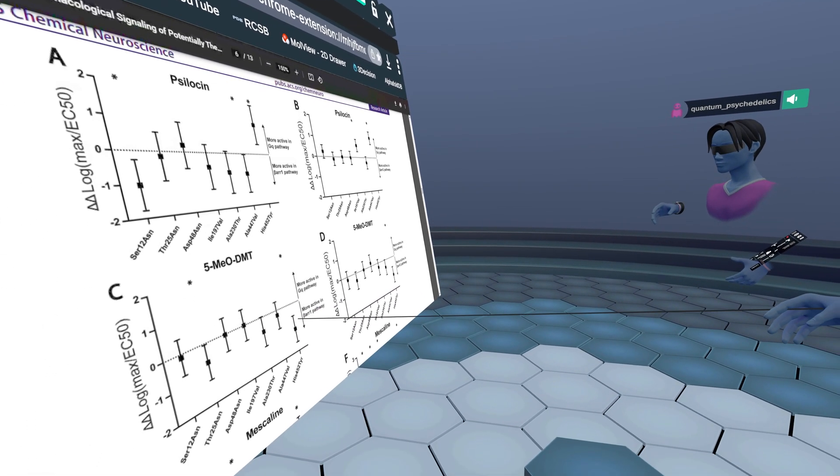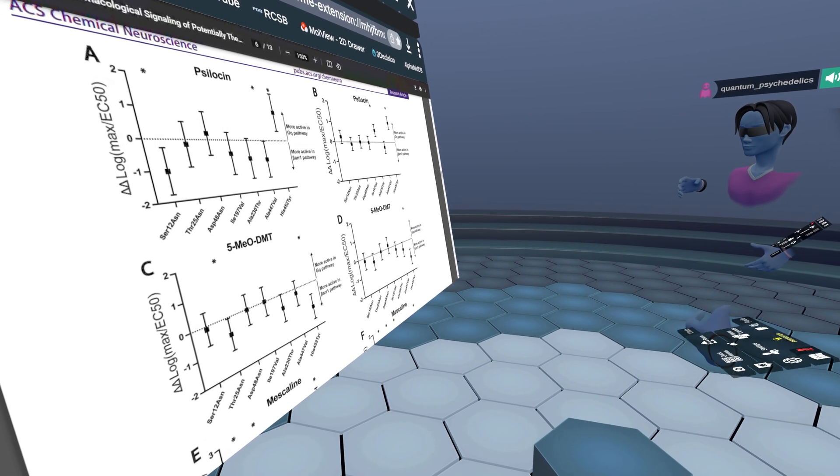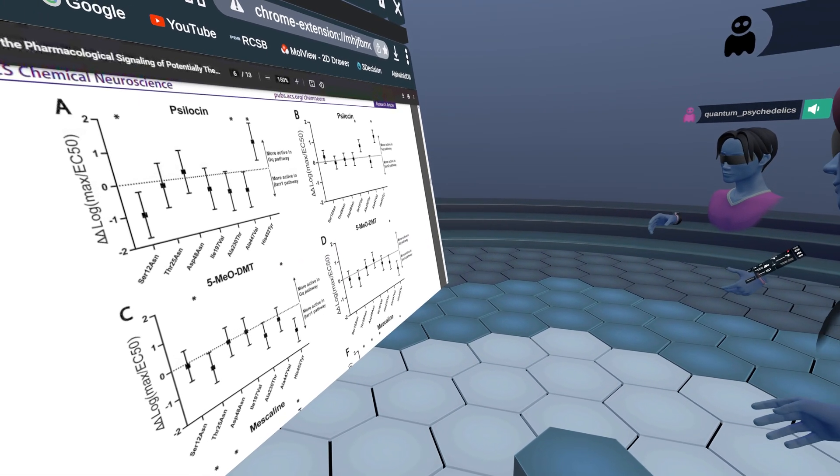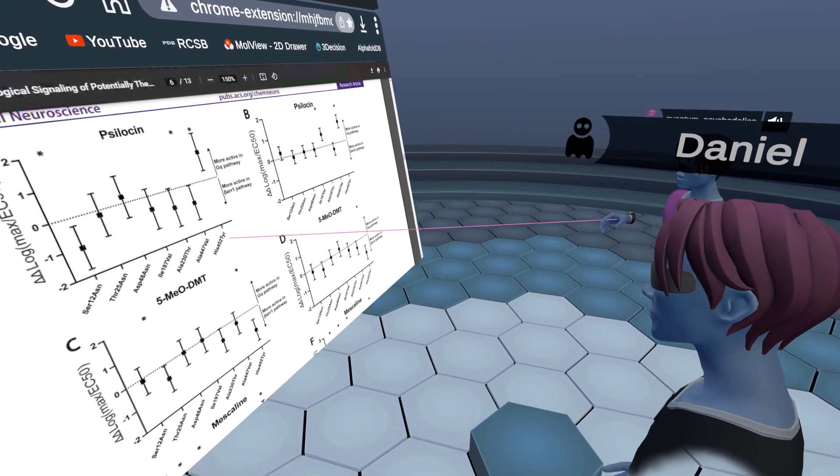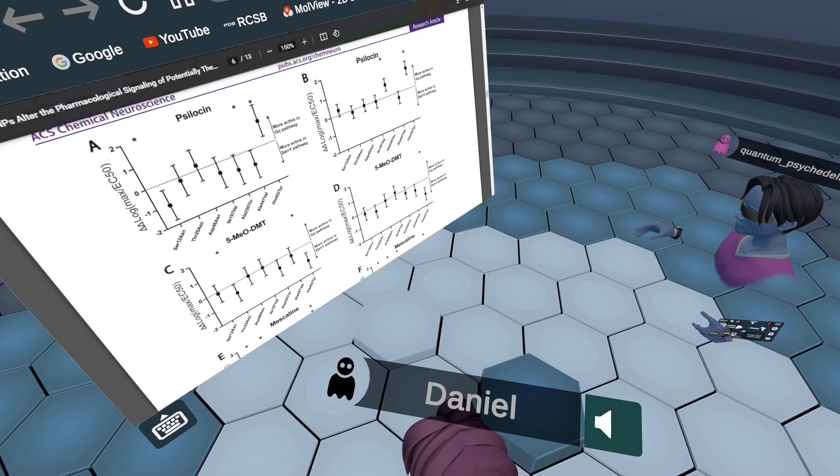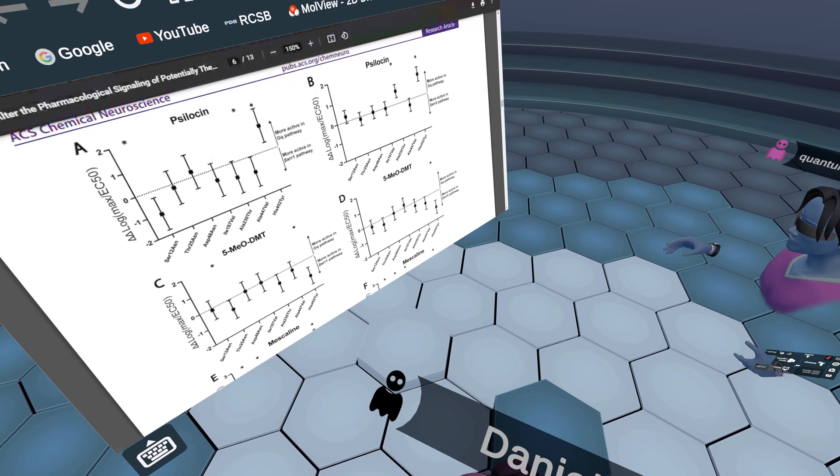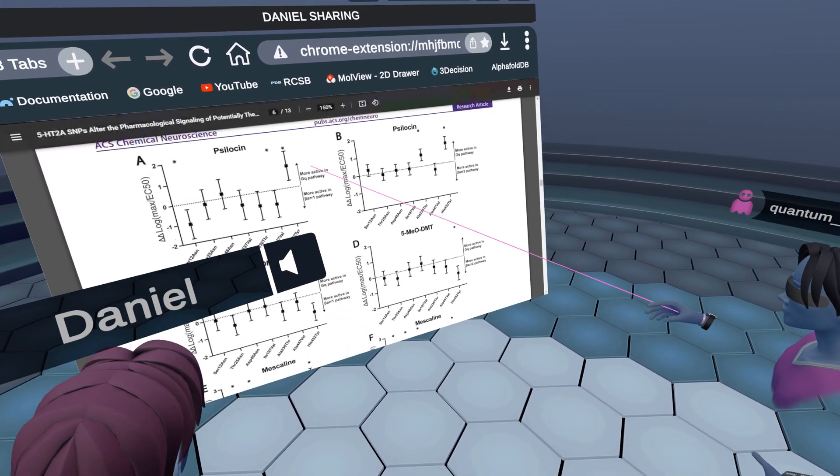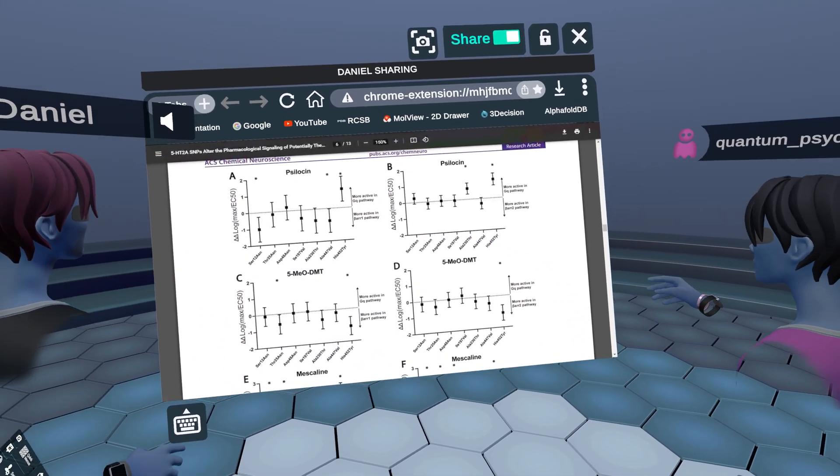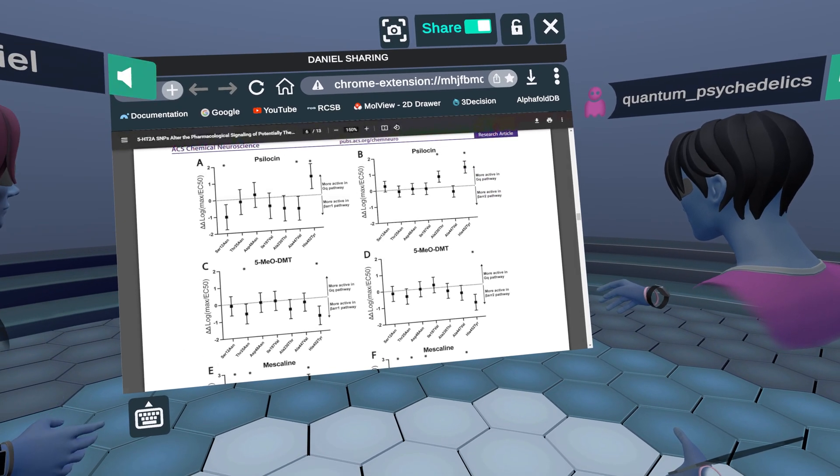you see a star because that is a statistically significant outcome. The punchline of this is that when you have the histidine 452 tyrosine mutation in a lot of these, you see that the bias actually flips. For example, this one with psilocin, you see it more going towards the GQ or G-protein pathway, okay? And also right here with psilocin, okay? But down here,